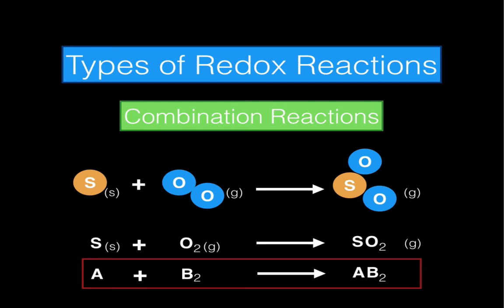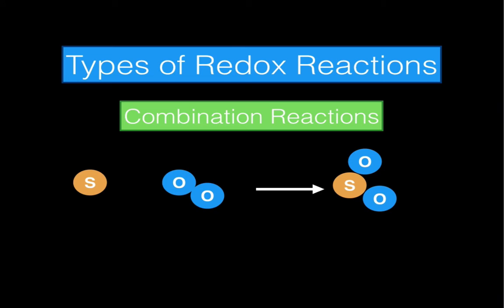Here's my general equation for this type of reaction: you have element A combining with a separate element B, and it will combine to form a brand new compound AB. This is a combination reaction — you have two separate elements combined. Something else to keep in mind is that this is a redox reaction, which means one of these elements will be reduced and the other element will be oxidized.